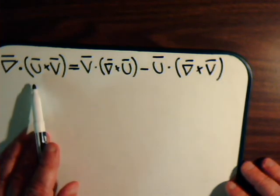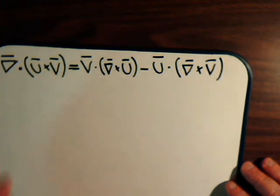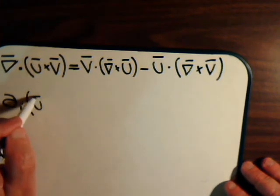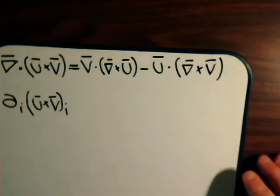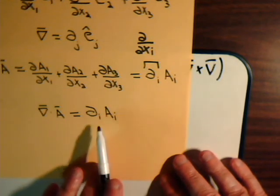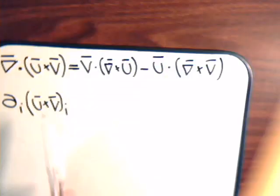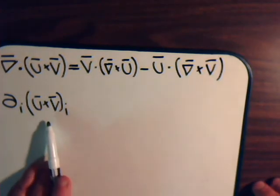Now here we have the divergence of a vector where the vector is a cross product. In component form, this would be written as partial i times the i-th component of u cross v, just like we did for del dot A written as partial i A i, only A is now replaced with the cross product.